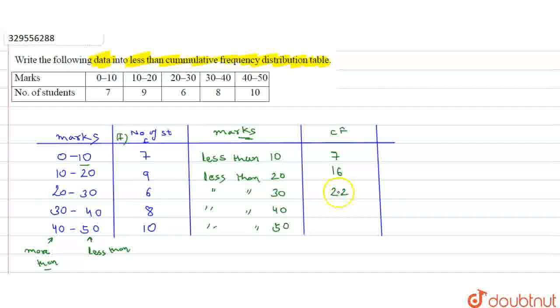16 plus 6 equals 22. 22 plus 8 equals 30. 30 plus 10 equals 40. So our cumulative frequency at the end is 40. The sum of frequency is 40, which equals this. So we have extracted the data for less than.